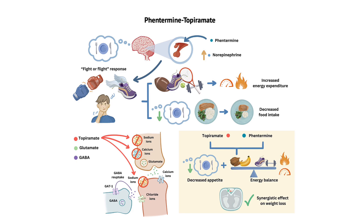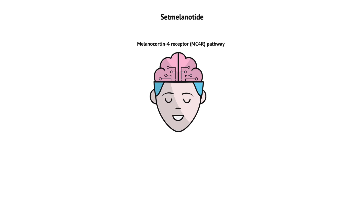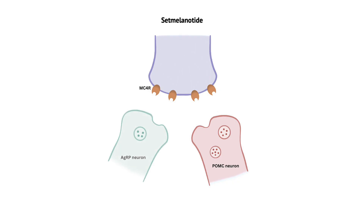Continuing our discussion, we now turn our attention to setmelanotide. As a member of the melanocortin receptor agonist drug class, this novel peptide drug has been specifically developed to treat obesity caused by genetic deficiencies in the melanocortin-4 receptor pathway. The MC4R pathway is a critical component of energy homeostasis regulation, with MC4R expressed in various regions of the brain, including the hypothalamus. This receptor plays a key role in regulating appetite and energy expenditure. The MC4R pathway is regulated by the melanocortin system, which includes the pro-opiomelanocortin (POMC) and agouti-related peptide (AGRP) neurons.